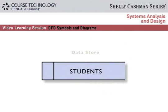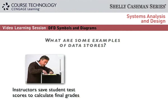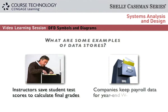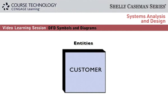A data store symbol represents data that is sent to or received from one or more processes. For example, instructors save student test scores to calculate final grades. And companies keep payroll data for year-end W-2 forms. An entity symbol represents someone or something that interfaces with the information system. In this example, the entity is a customer. An entity can supply data to the system or receive data from the system, or both.